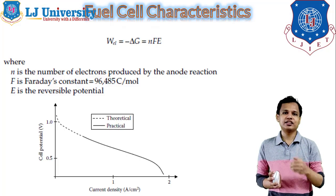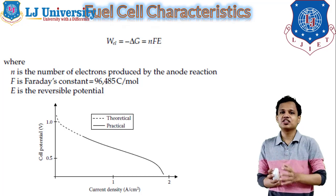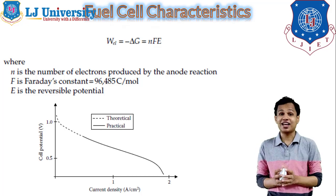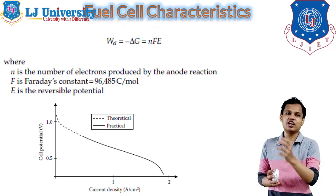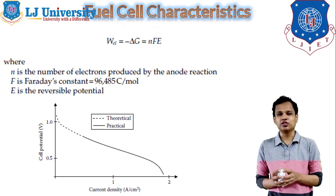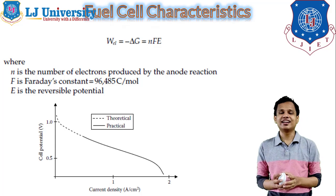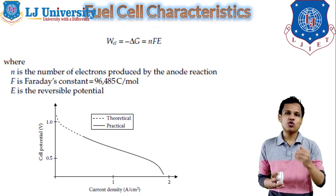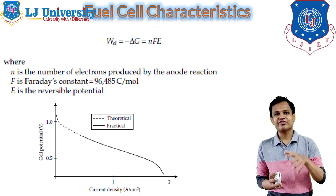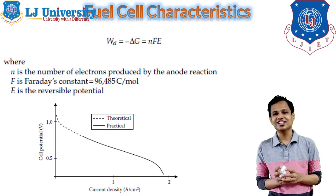These are the basic fuel cell characteristics that need to be fulfilled when using the fuel cell in a vehicle. The basic formula gives us the energy liberated by the fuel cell: NF×E, where N is the number of electrons produced by the electrode reaction, F is Faraday's constant, and E is the reversible potential of the fuel cell. The graph shown gives current density versus cell potential. The theoretical dotted line shows the voltage of one fuel cell is around 1.2 V, but in the actual practical value the voltage is around 0.7 V per cell.